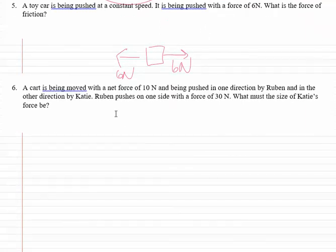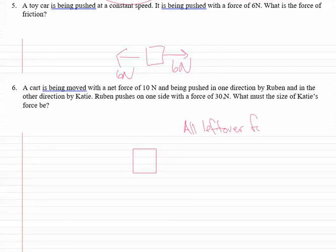For number six, a cart is being moved with a net force of 10, being pushed in one direction by Rubin and in the other direction by Katie. Rubin pushes on one side with a force of 30. What must Katie's force be? There's a lot going on here, so let's start with the diagram. It's being moved with a net force of 10, so that means that the leftover force must equal 10 newtons.